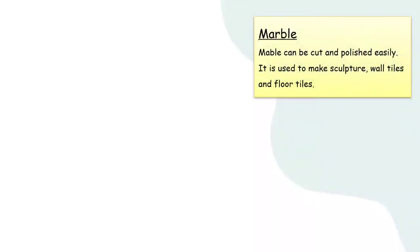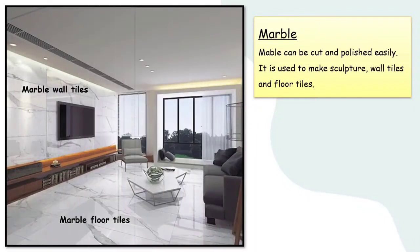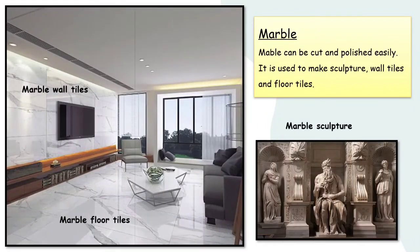The next type is marble. Marble can be cut and polished easily. It is used to make sculptures, wall tiles, and floor tiles. Here are examples of marble wall tiles, marble floor tiles, and a marble sculpture.